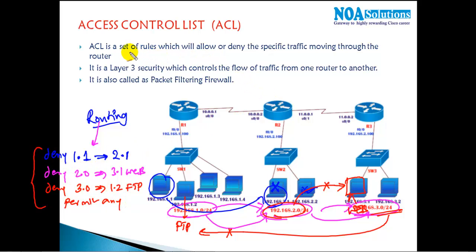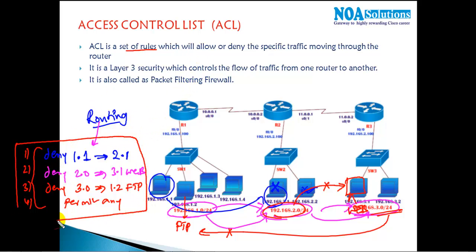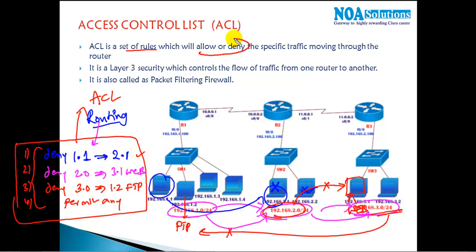These are examples of specific rules — rule one, rule two, rule three, rule four. All these rules combined together are referred to as an Access Control List. An access control list is simply a set of rules that can allow or deny selected traffic.